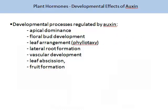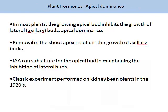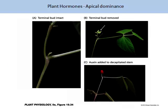Auxin has many developmental effects, including apical dominance, floral bud development, leaf arrangement, lateral root formation, vascular development, leaf abscission and fruit formation. In most plants, the growing apical bud inhibits the growth of lateral buds — this is known as apical dominance. Removal of the shoot apex results in the growth of axillary buds, and auxin can maintain the inhibition of lateral buds. Classic experiments were performed on kidney bean plants in the 1920s to demonstrate apical dominance. The figure on your screen illustrates these experiments, showing the terminal bud intact, the terminal bud removed, and auxin added to decapitated stems. This brings us to the end of the lecture on plant hormones, part 1.